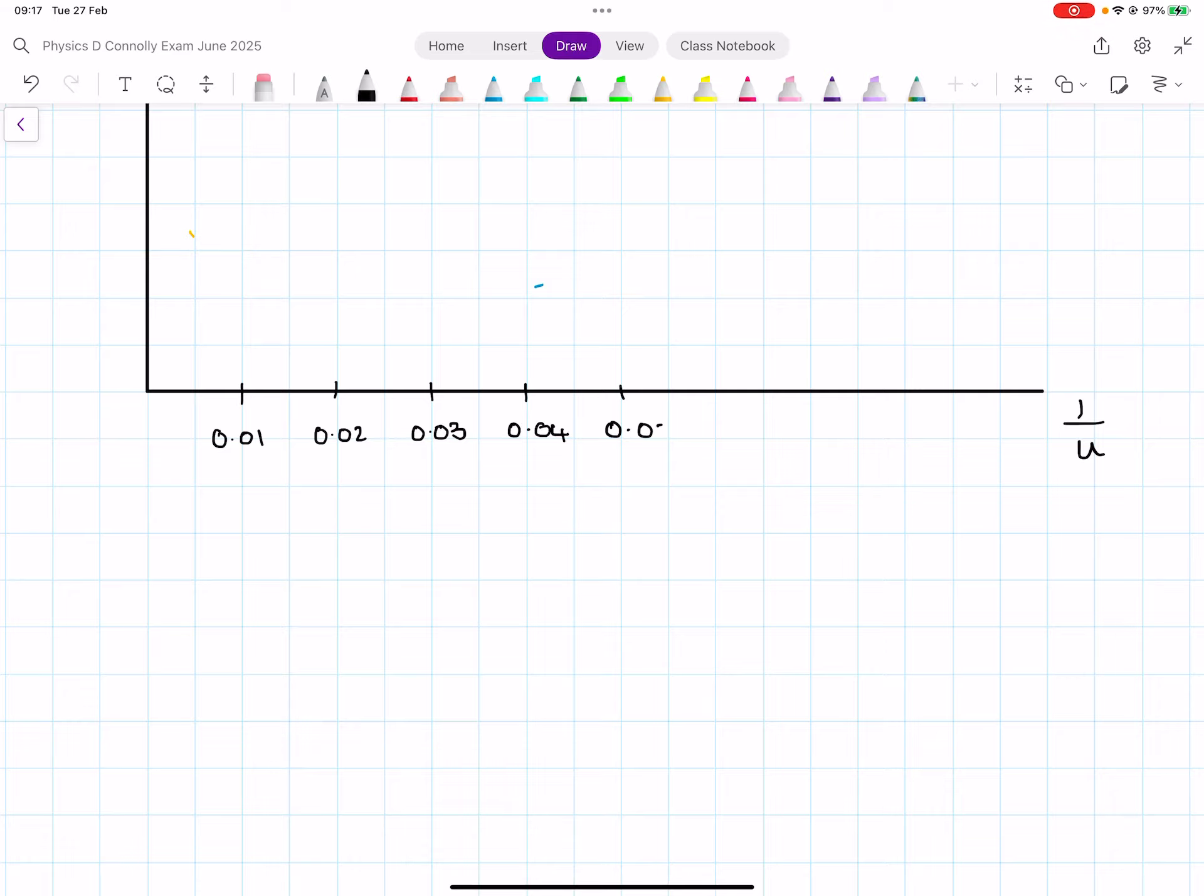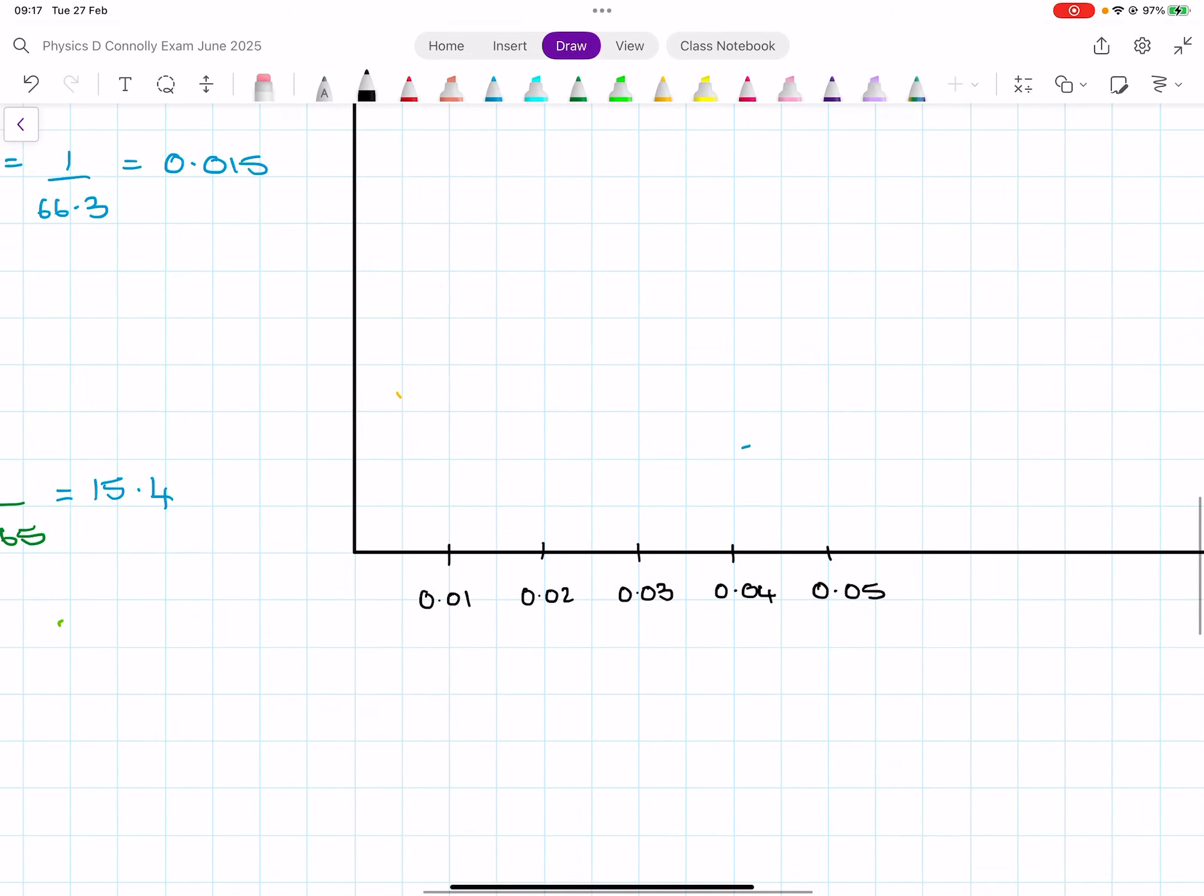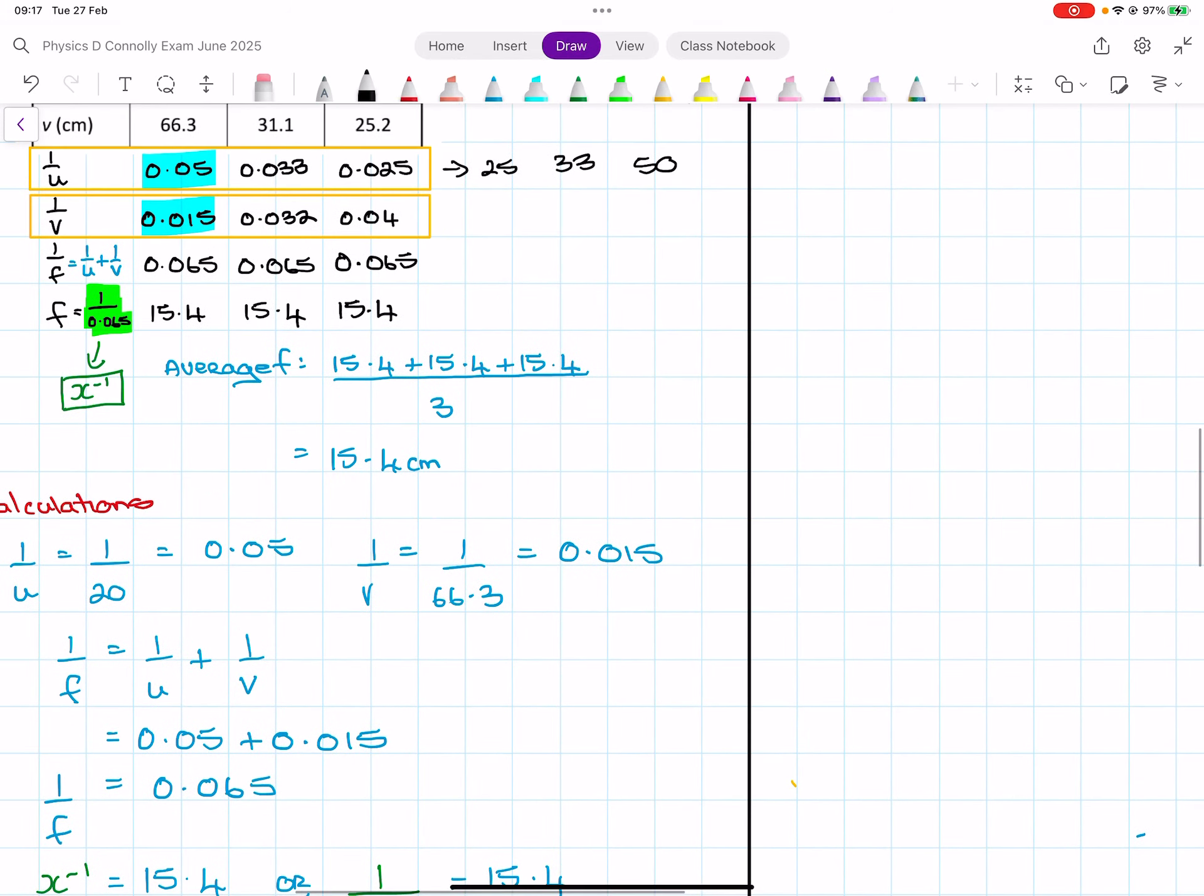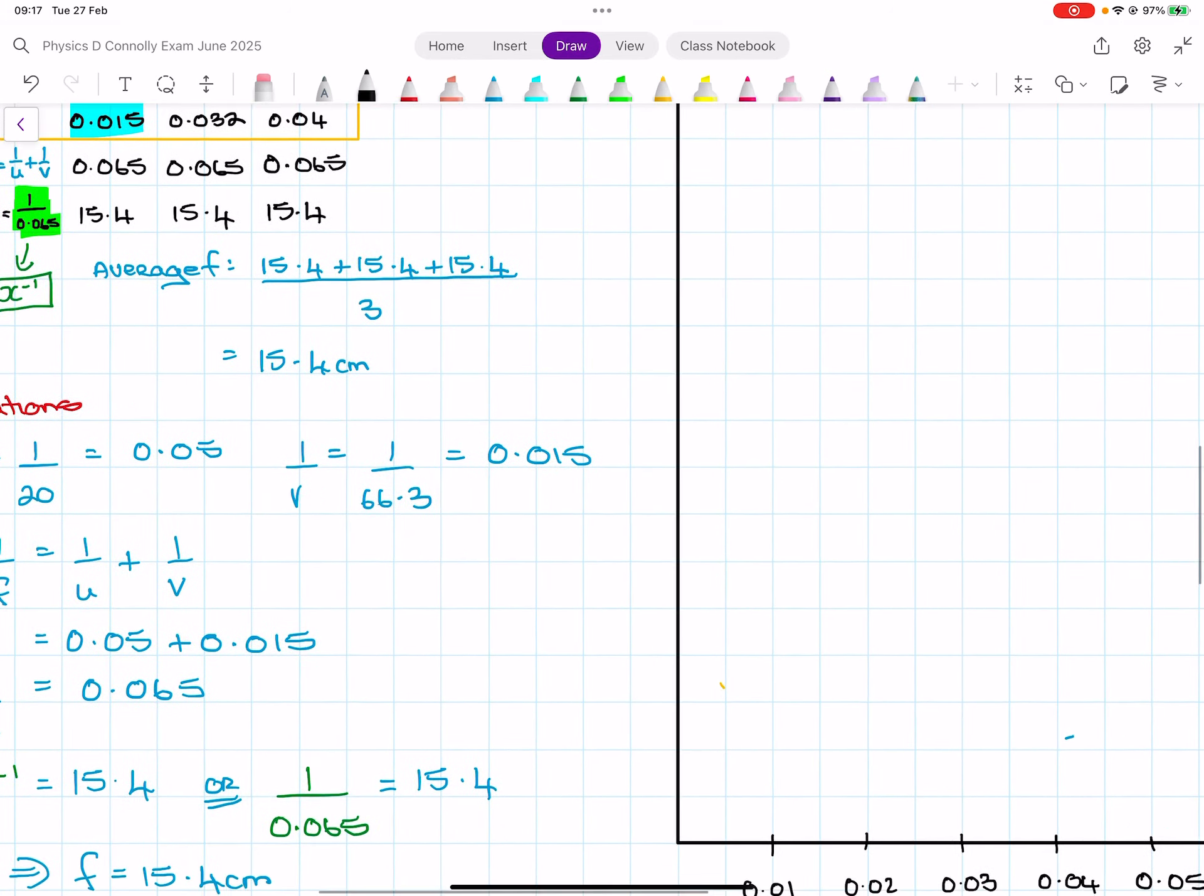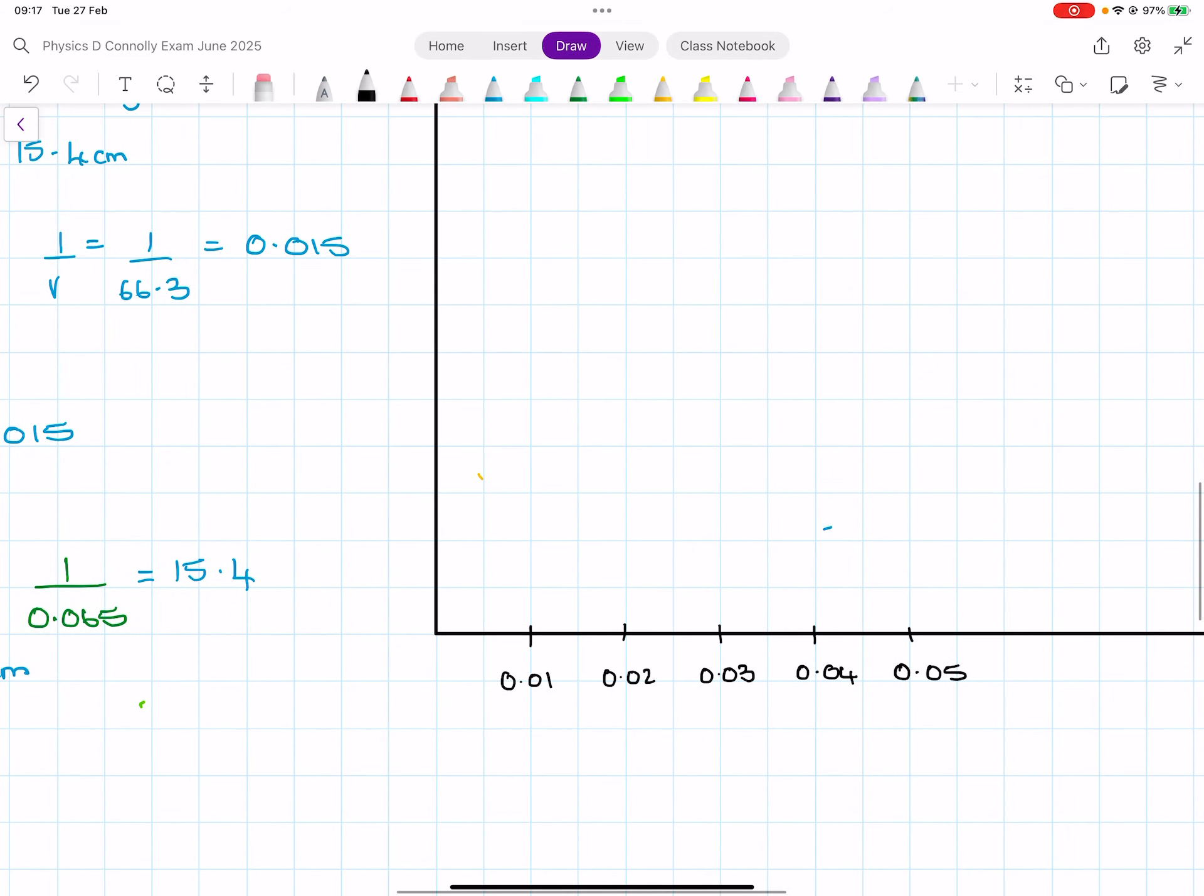And then the other axis we could actually just do the same. So 0.01, skip two boxes, 0.02, skip two boxes, 0.03, 0.04, and 0.05.